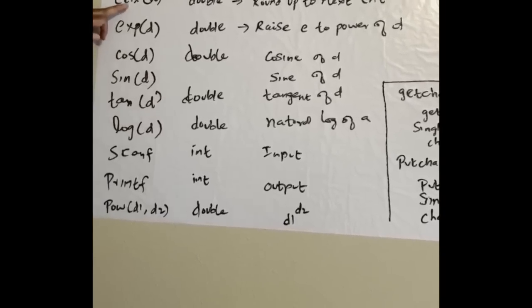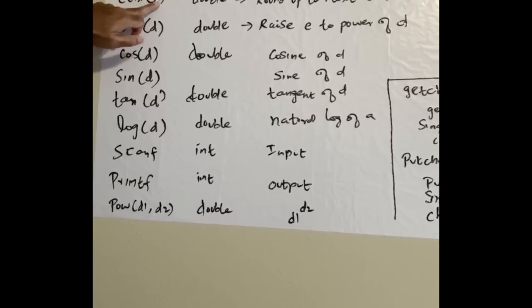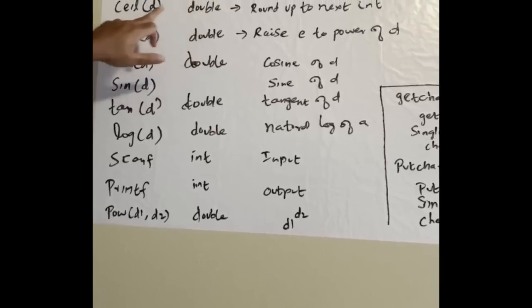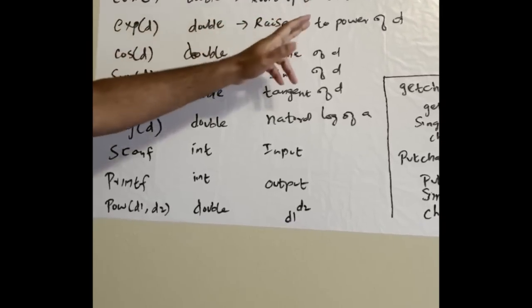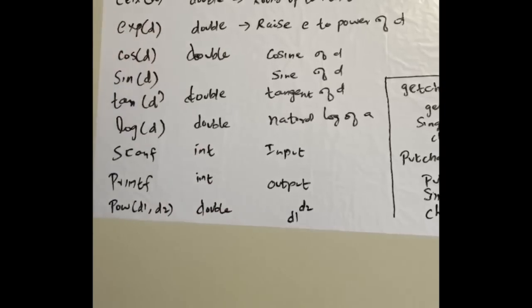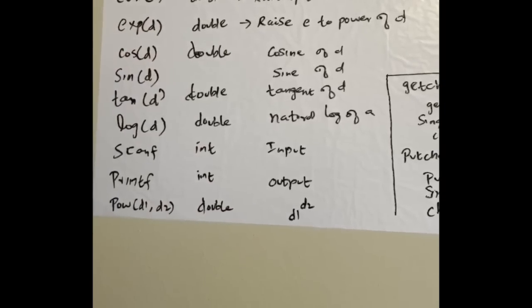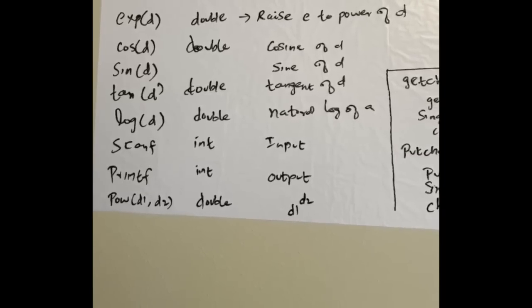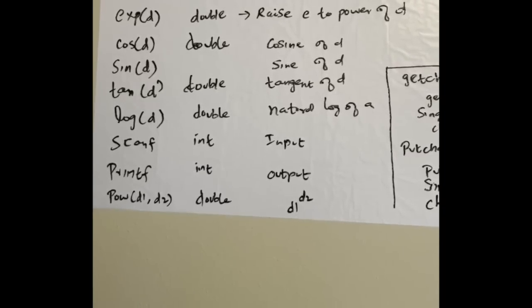Second is ceil(d) that returns a double value. Ceil is used to round up to the next integer. For example, ceil of 5.7 is 6 because the decimal is 0.7 - anything greater than 0.5 it will add to the next number.